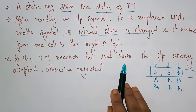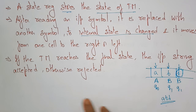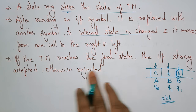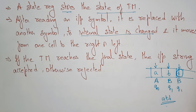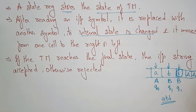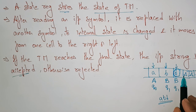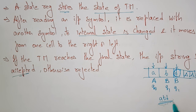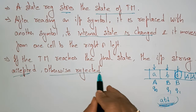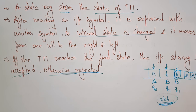If the Turing Machine reaches the final state, the input string is accepted; otherwise it is rejected. After that, all remaining cells will have blank spaces. Whenever we see that blank space, the string is accepted. If the blank space is not there and the string has not been fully read, the Turing Machine rejects it. Whenever the Turing Machine reaches the final state, the input string is accepted; otherwise it is rejected.